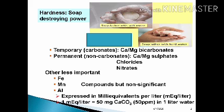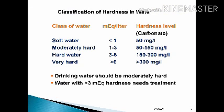Classification of hardness of water: Soft water has hardness less than 1 milliequivalent per liter, equal to less than 50 mg of calcium carbonate per liter. Moderately hard water ranges from 1 to 3 milliequivalents per liter, equivalent to 50 to 150 mg of calcium carbonate per liter. Hard water ranges from 3 to 6 milliequivalents per liter, equal to 150 to 300 mg of calcium carbonate per liter. Very hard water is more than 6 milliequivalents per liter, equivalent to more than 300 mg of calcium carbonate per liter.